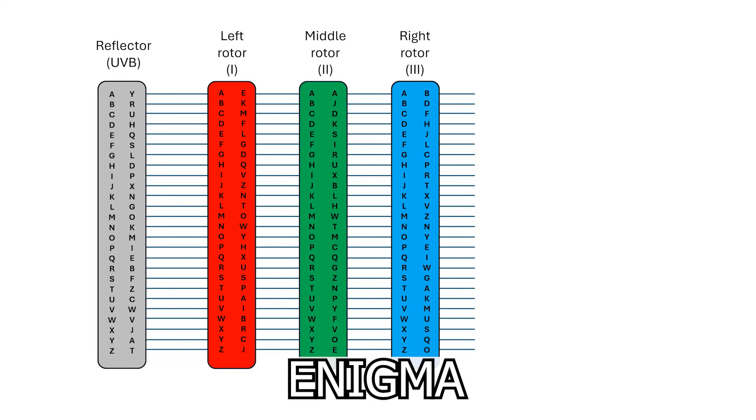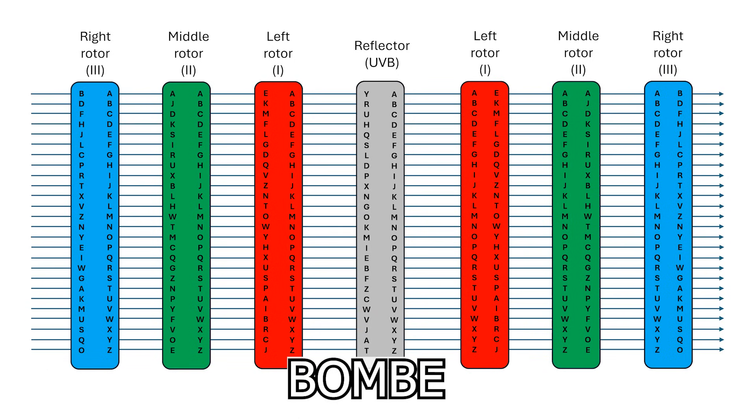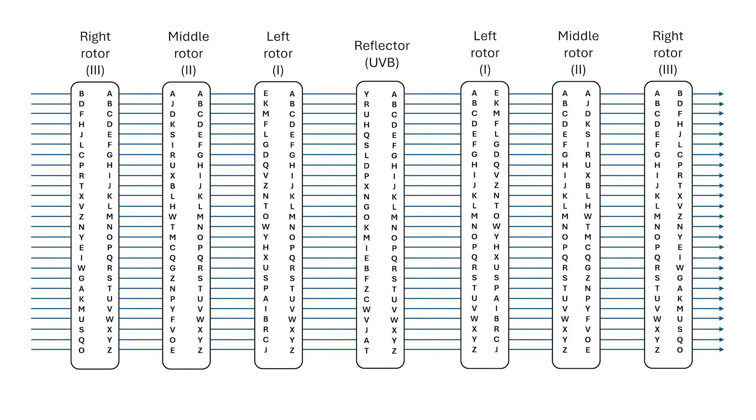The solution used in the Bombe, was to actually replicate the three rotors in each scrambler, which is the term Davies used to describe a set of rotors. A signal comes in the left, passes through rotors 3, 2, and 1. The reflect board no longer reflects, but modifies and passes through the signal, acting more like a fixed rotor.